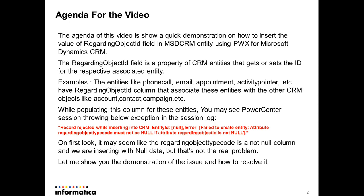While populating this field using PowerCenter, you may see an exception in the session log saying: 'Record rejected while inserting into CRM because the attribute regarding object type code must not be null if attribute regarding object ID is not null.' On first look, this error may seem like the type code is a not-null column and we're inserting null data.